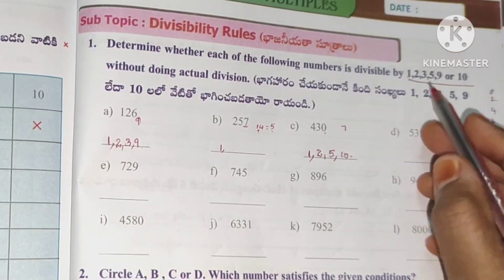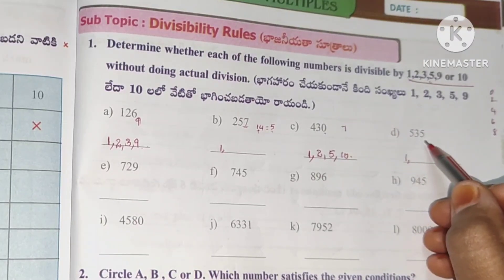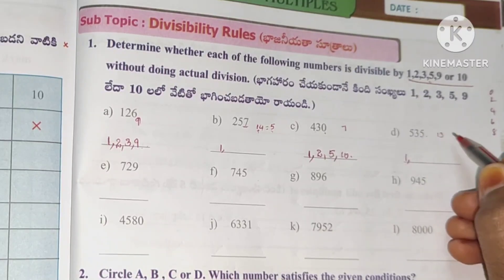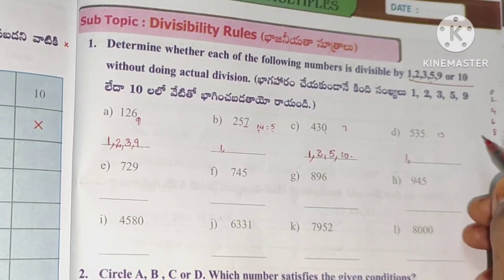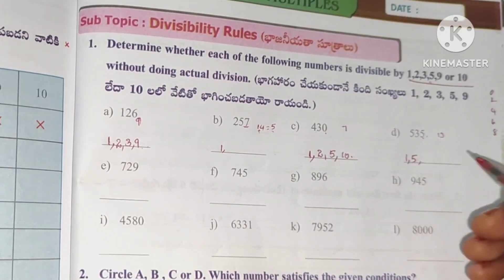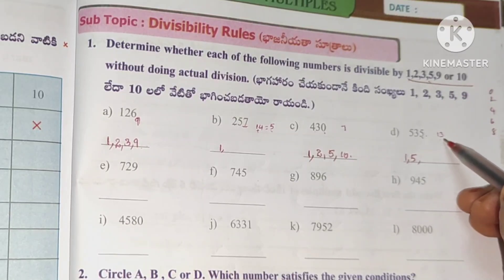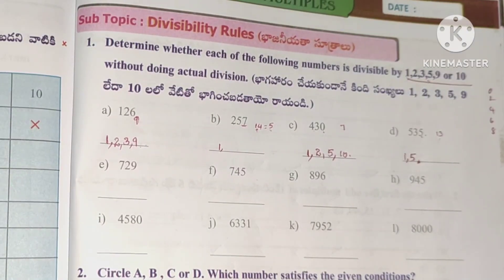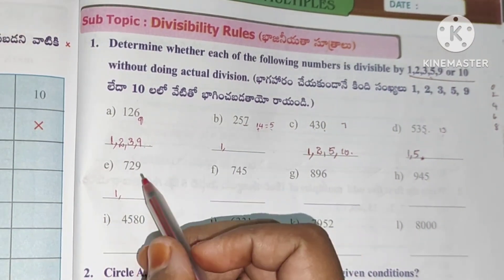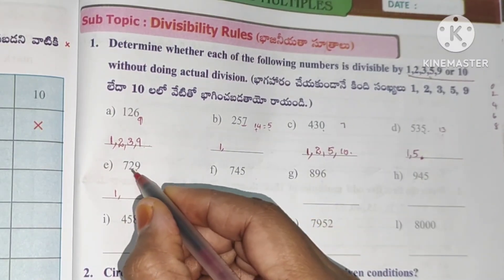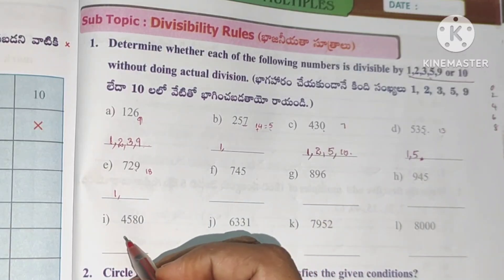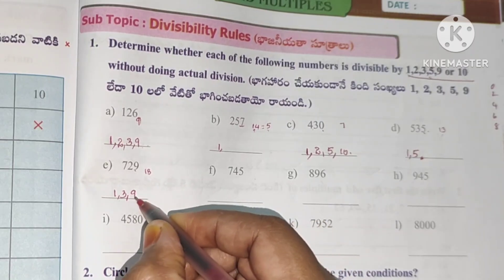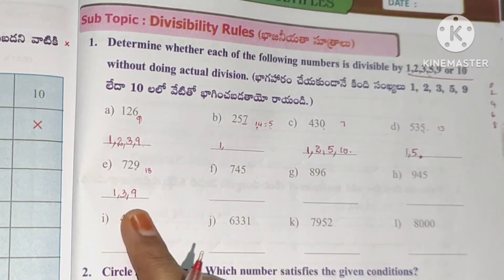Using divisibility rules: it is divisible by 1 and not divisible by 2 or 3. Digital root: 5 plus 5 is 10, 10 plus 3 is 13. 13 is not divisible by 3, so 3 is out. Units place is 5, so it is divisible by 5. Digital root 13, so not divisible by 9. It is divisible by only 1 and 5. Next: divisible by 1, not by 2 (units place 9). Digital root is 18, divisible by 3. Not divisible by 5. 18 is divisible by 9, so divisible by 9.